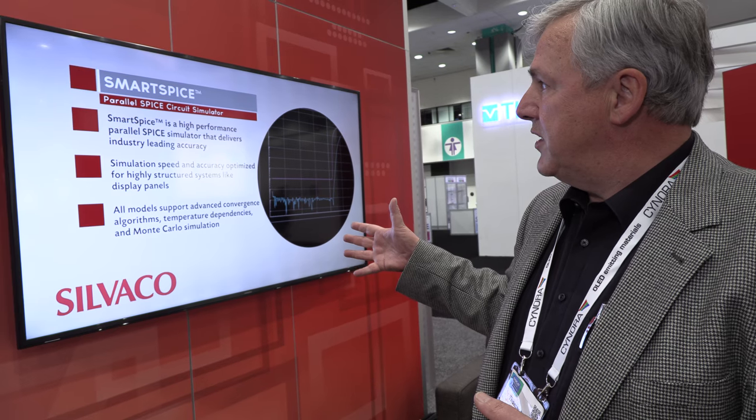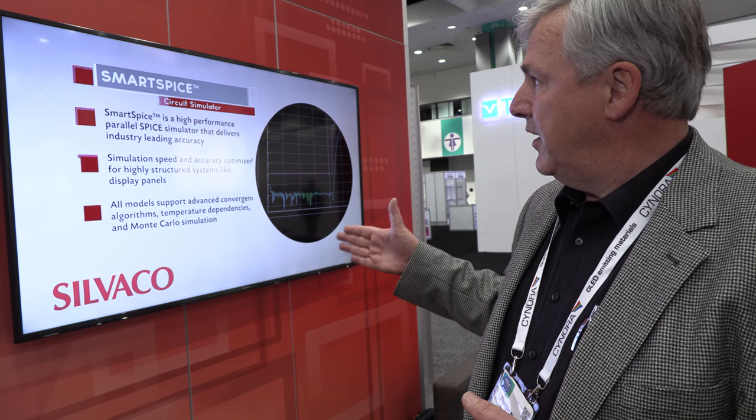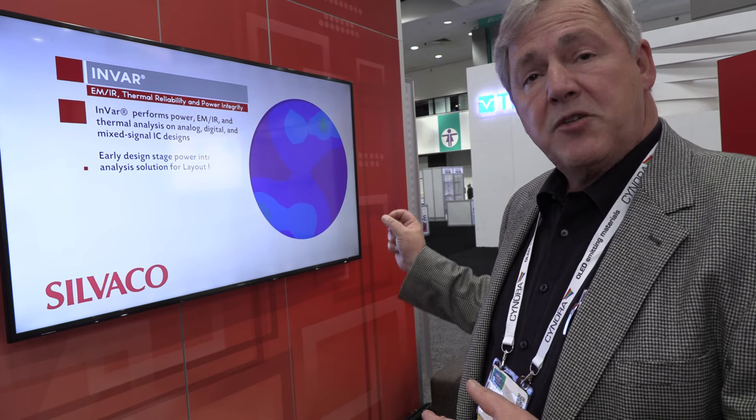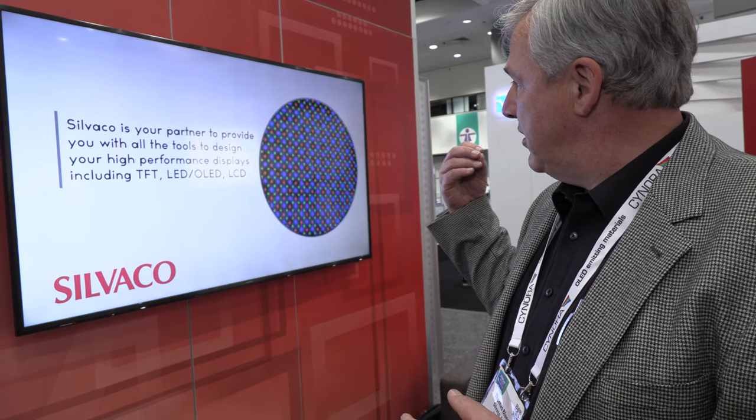The next tool is InBar. InBar is where you do your reliability and thermal analysis — you can see where the hotspots are on your display, make sure your parasitics are correct, and ensure your metal lines are thick enough to transfer current to the individual pixels. That's a very important tool our customers are using. Here you see a micro LED panel, and zooming out you get an overview of all the tools our customers use to design displays.